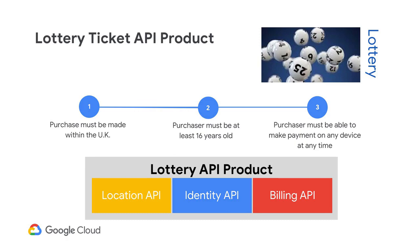The API product is formed as a collection of APIs that provides the user with the experience of purchasing a lottery ticket and ensuring that the minimum qualifications are met: the purchase must be made within the UK, the purchaser must be at least 16 years of age, and payment can be completed as part of that transaction. Furthermore, including reusable assets such as an enterprise security policy and a traffic management policy will ensure adherence to corporate requirements, enabling faster time to market. Because the lottery API product packages all of the necessary items, applications can be quickly created to allow purchasing of lottery tickets over a wide variety of experiences convenient for the player — like online, mobile app, and kiosk purchases.